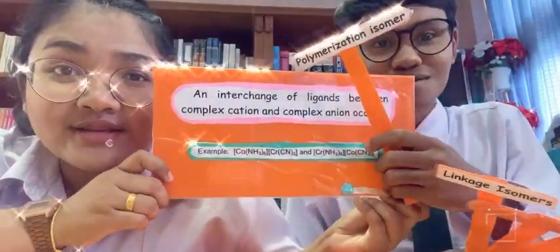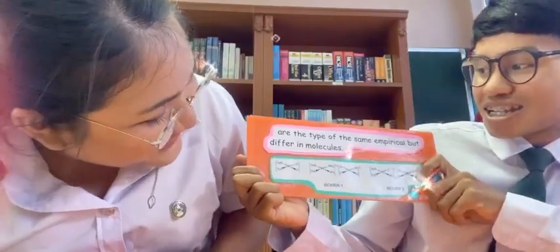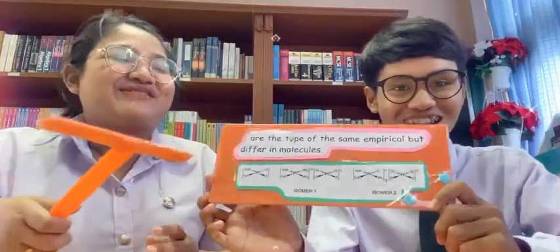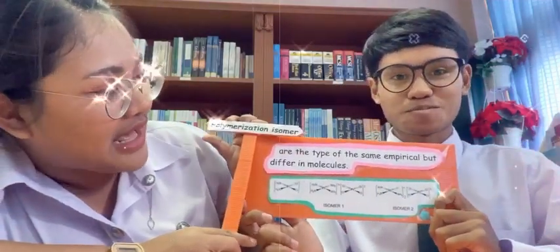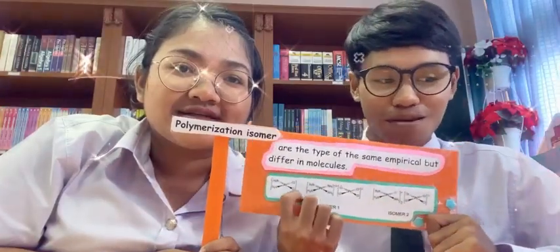Can you answer? Correct! Okay, now we turn to you — I'll mix it. One, two, three... Yes, correct! This is the polymerization isomer. So this is an example of our game and our information. Thank you for watching and see you next time.